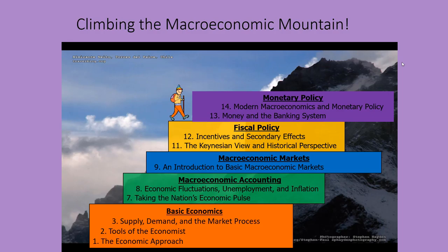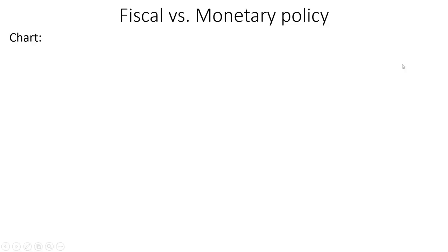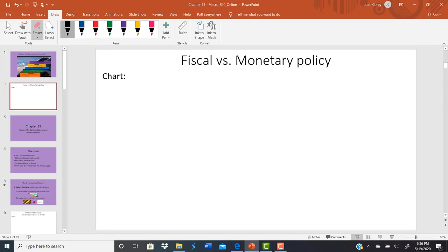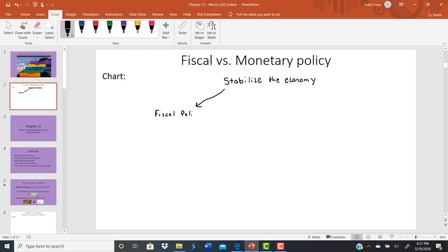Before we get started on this section, I want to mention a brief difference between fiscal and monetary policy. Both of these policies are going to be used to stabilize the economy. I want to make sure that we understand this difference so that we know the difference between what we talked about in chapters 11 and 12 and then chapters 13 and 14. There are two different kinds of policies we can use to stabilize the economy. One is fiscal policy, which is what we've been talking about in the last two chapters — chapters 11 and 12.